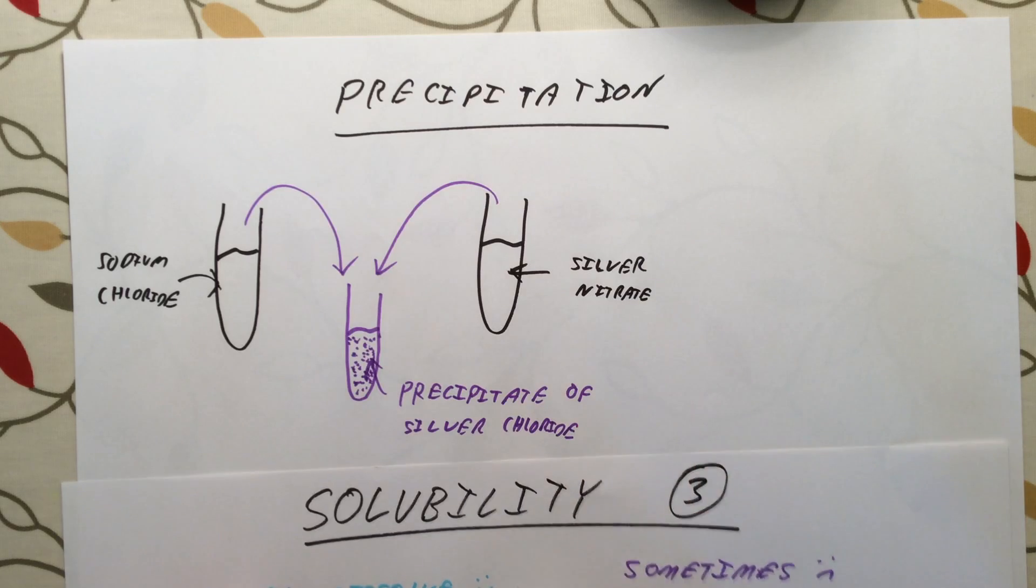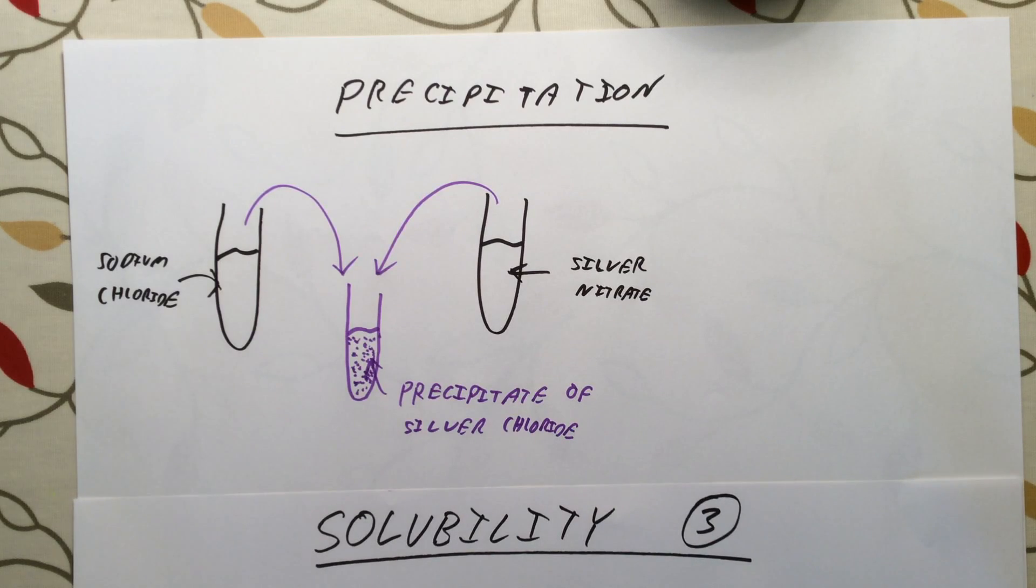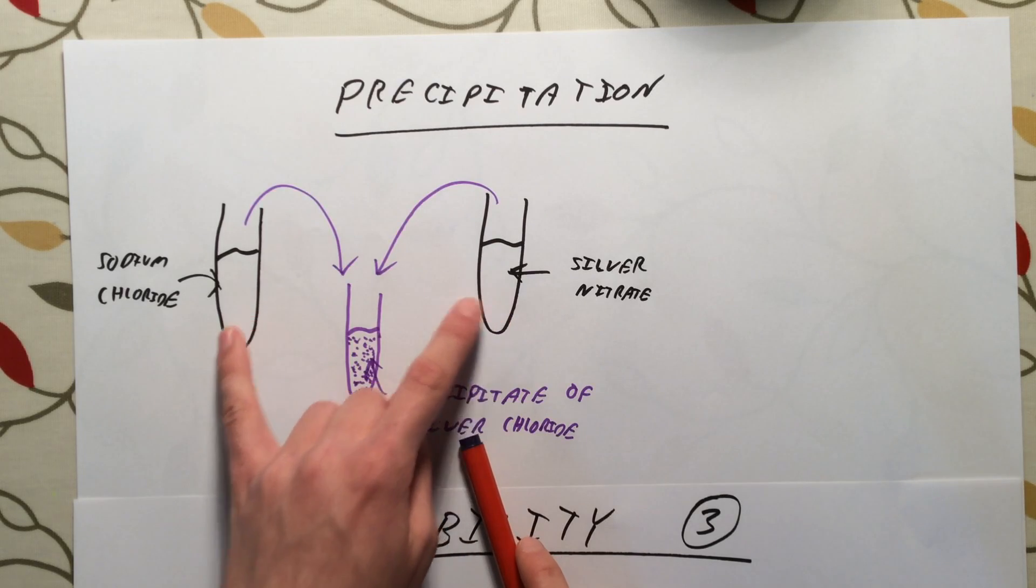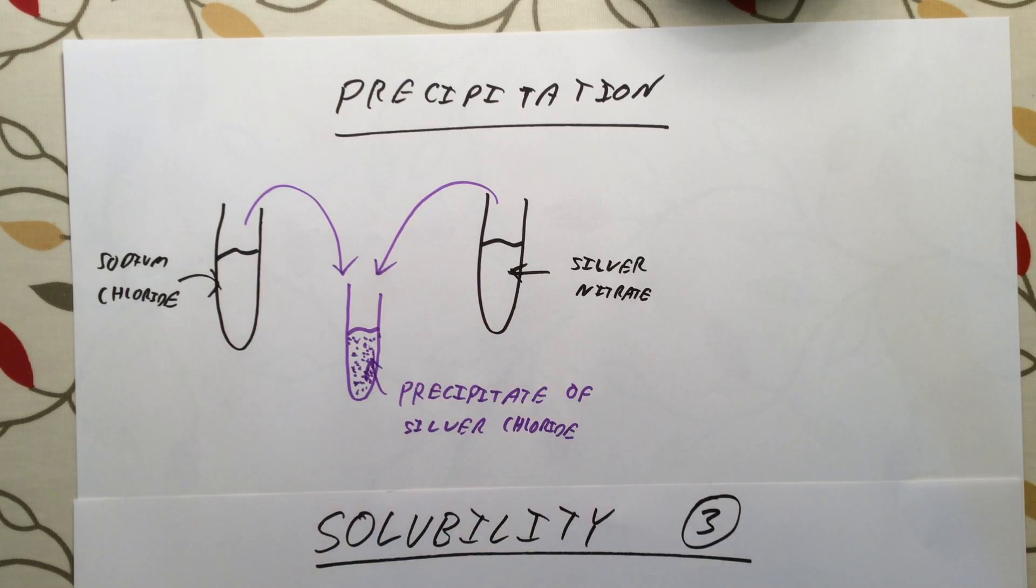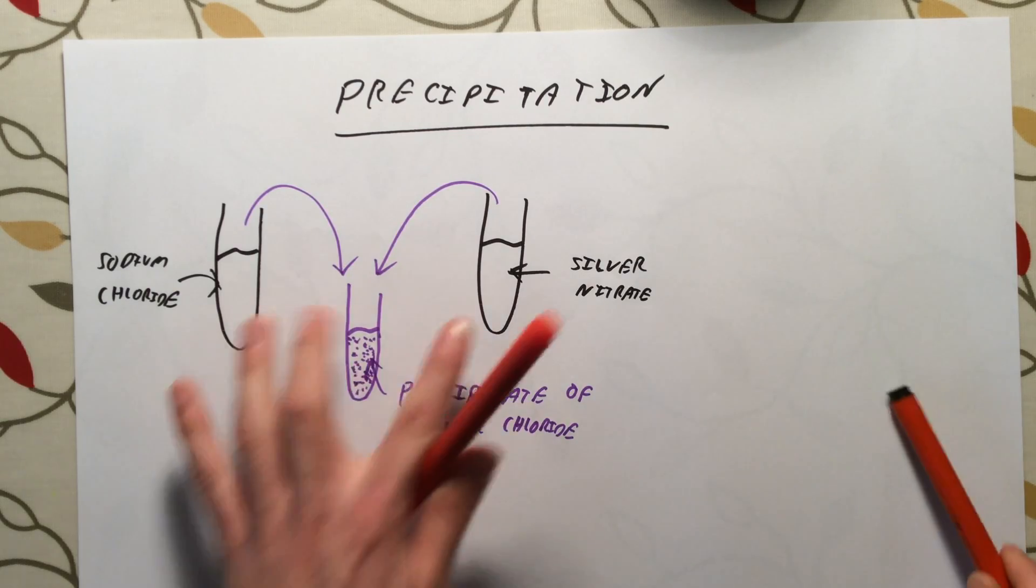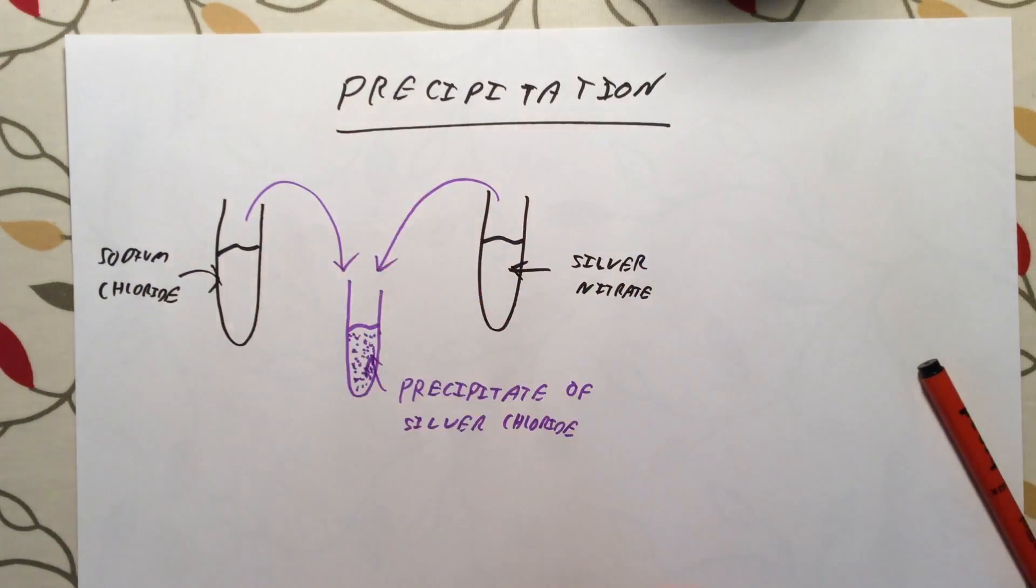On an exam, there is an absolute gift of a question that might ask you how you form a pure dry sample of a solid from the reaction of two solutions. It sounds quite complicated and technical, but it's actually dead easy to get yourself four marks on this. The first step you need to do is mix your solutions together. So step one is mix. That forms or produces our precipitate.